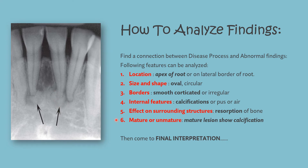Internal features involve checking for the presence of any calcification or pus within the lesion. Then, the effects on surrounding structures — whether the lesion is causing resorption of surrounding bones. Finally, whether the lesion is mature or immature: in a mature lesion there will be more calcification, and in an immature lesion there won't be much calcification. After analyzing all these findings and features, one should come to the final interpretation.